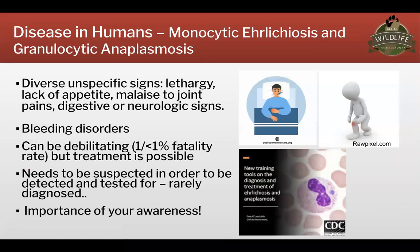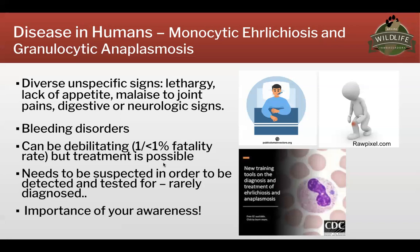In humans, the disease is very unspecific in its signs. Often at first it's lethargy, lack of appetite, and general unwellness. One can have joint pains, especially with Anaplasma, but also diarrhea and neurologic signs are observed. Bleeding disorders are also reported in human infection. This disease, as mentioned, can be debilitating. The fatality rate in ehrlichiosis for humans is up to one percent. In anaplasmosis it is a little lower, but treatment is possible — it just needs to be suspected in order to be detected and tested for.